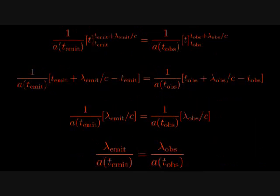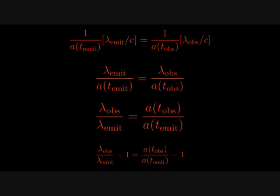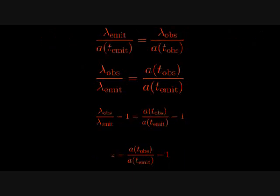We can rearrange terms to get a relation between the scale factor of the universe and wavelength of the photon at the beginning and ending of the photon's trip. This relation simply says that the wavelength of the photon increases by the same factor that the size of the universe increases. We can get our desired relation by subtracting one and using the definition of the redshift parameter.